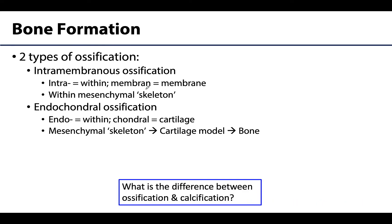These two types of ossification are referred to as intramembranous ossification as well as endochondral ossification. But before we get into the description of these, I want to focus on this question right here. Because the terms ossification and calcification are often used interchangeably, which is incorrect. These terms are not synonymous.